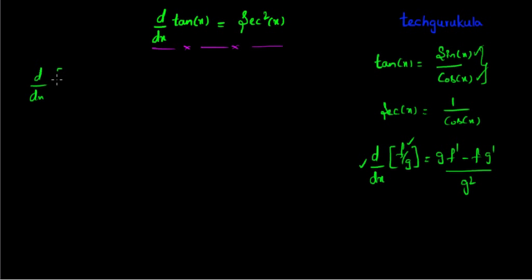In that case, if you rewrite this, d by dx of sin of x divided by cos of x, we can write it as